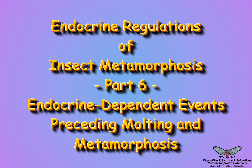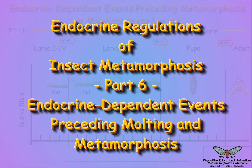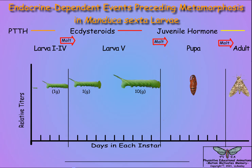Holometabolous insects initiate pupal formation and metamorphosis in response to endocrine-dependent events that precede the molt of the last larval instar. As shown in the previous scene, juvenile hormone titers remain high in accompaniment with ecdysteroids in all larval molts before the fifth instar, thus resulting in immature feeding larvae. However, there are two physiological milestones that occur in the fifth instar.